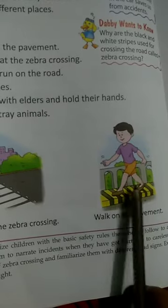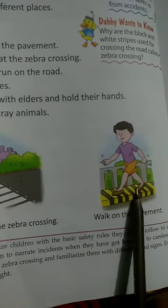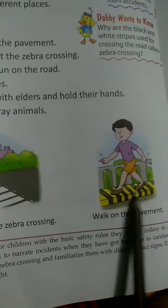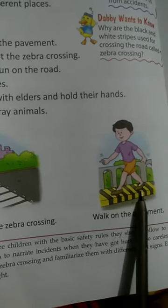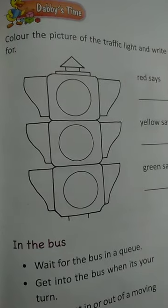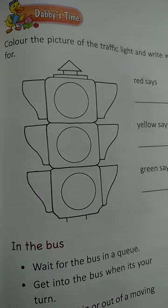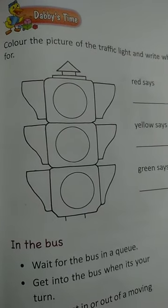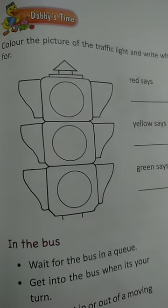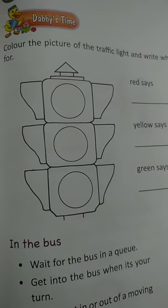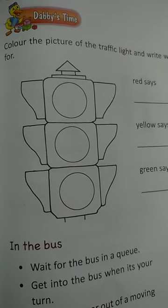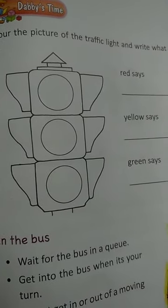See, in this picture this boy is walking on the pavement — that means the roadside. He is walking on the roadside. With the help of this activity, I will tell you about traffic rules, which you also know very well.